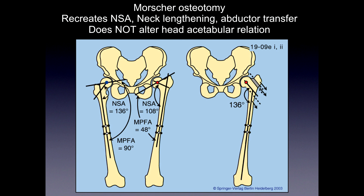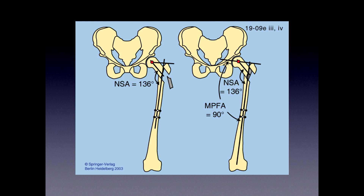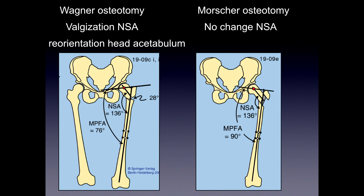Where there's a high riding trochanter, abnormal neck-shaft angle, abnormal medial proximal femoral angle, and a short neck, you want to address all three with a Morse osteotomy: osteotomize the trochanter and neck at a 136-degree angle, slide the shaft laterally, and reattach the trochanter. Compare this to the Wagner osteotomy, which changes the orientation of the head relative to the acetabulum — desirable in some cases, but may require an additional acetabular procedure. The Morse osteotomy preserves the relationship between the head and acetabulum — if that relationship is congruent, you can do a Morse without changing it.